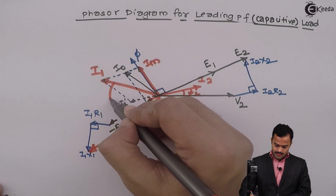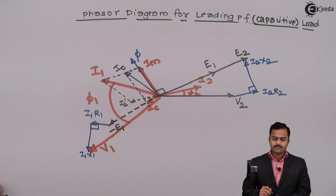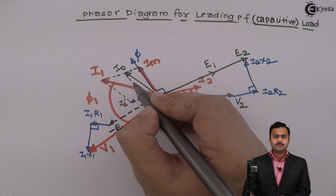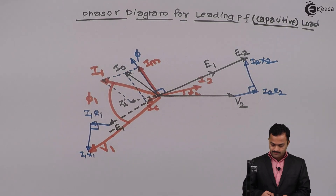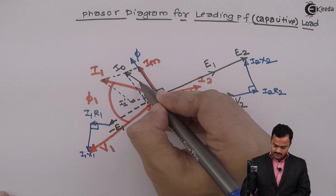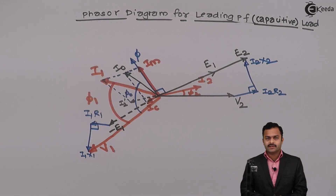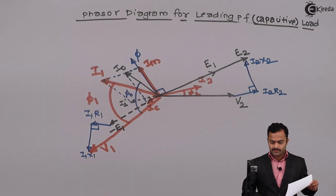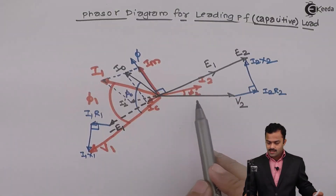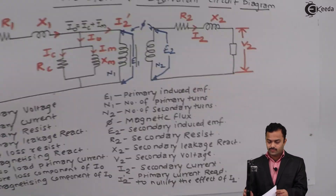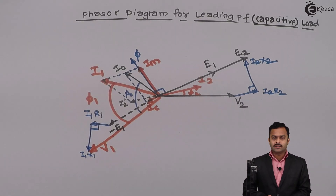The angle between I1 and V1 is phi1, the primary power factor angle. Without a load, the no-load primary current is I0 and the angle between I0 and V1 is phi0. Once again, we started with the last parameter V2 and obtained the first parameter V1 using phasor relationships. Thank you.